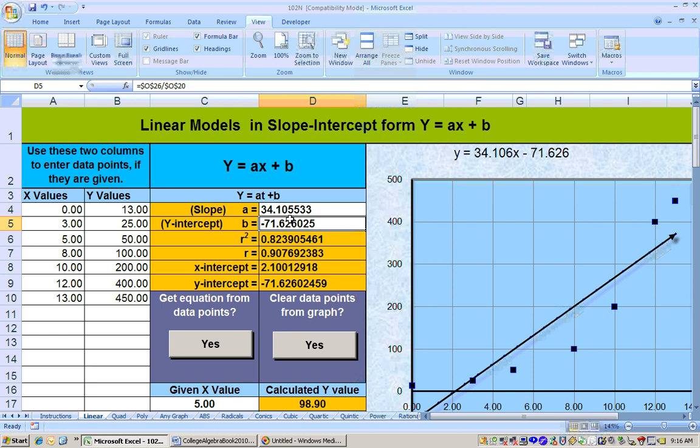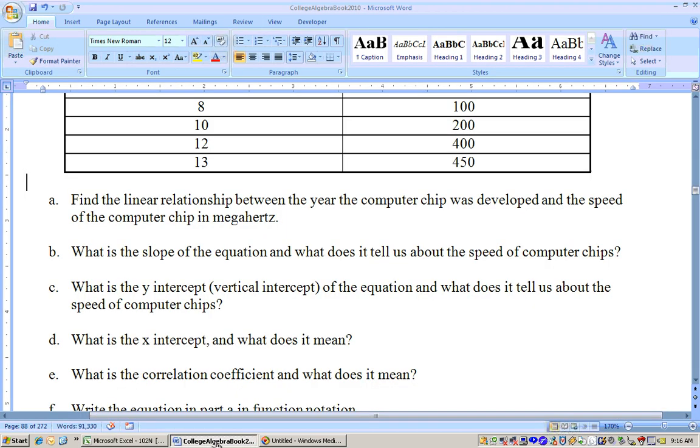I know that's impossible and out of the domain of this model, but that's what the y-intercept tells us. The x-intercept is 2.1 comma 0. That means 2.1 years after 1985, the speed would be 0, and the correlation coefficient is 0.907, which is greater than 0.7, so it's a strong positive relationship between these two variables.